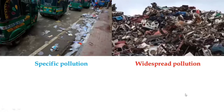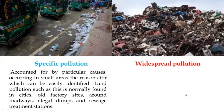There are two types of soil pollution. First, specific pollution, which is accounted for by particular causes occurring in small areas, the reasons for which can be easily identified. This type of land pollution is normally found in cities or factory sites, around roadways, illegal dumps, and sewage treatment stations.